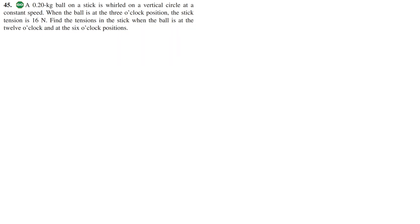All right for 45 you have a 0.2 kilogram ball on a stick whirled on a vertical circle at a constant speed. You know that when the ball is at the three o'clock position the tension is 16 newtons and you're supposed to find the tension at 12 and 6 o'clock. So let's kind of draw that. You have your circle and the ball is at three locations. Okay so at each of these locations the weight points down but depending on where you are tension is either pointing up or it's pointing down. Now it tells you that at the three o'clock position so that's right here at the three o'clock position your tension is 16 newtons. So it tells you tension is 16 newtons. Now why that's important is because you know that here tension is the centripetal force or that mv squared over r is 16 newtons.